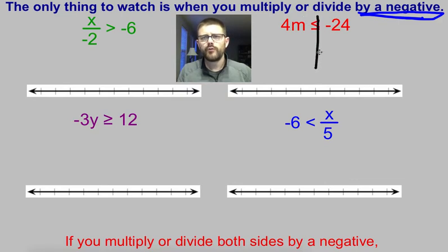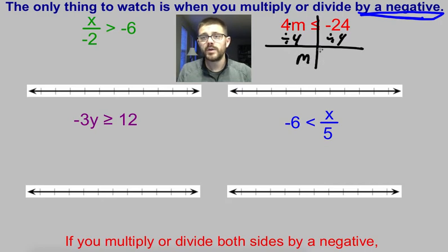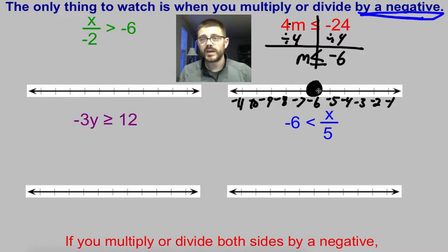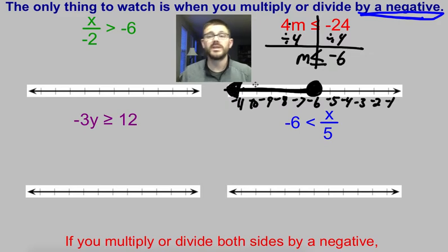Let's try this one first: 4m is less than or equal to negative 24. Well, 4m means 4 times m, so I'm going to do the opposite and divide by 4. I'm dividing by a positive number, so nothing fancy is going to happen. 4 divided by 4 is just m. Less than or equal to: negative 24 divided by positive 4 is negative 6 — it was negative, it stays negative. On the number line, counting up towards 0 to the right and down into the negatives going to the left. I want a closed circle because it's okay to equal negative 6, and I shade everything going to the left. Remember to put a big arrowhead there to show it continues.